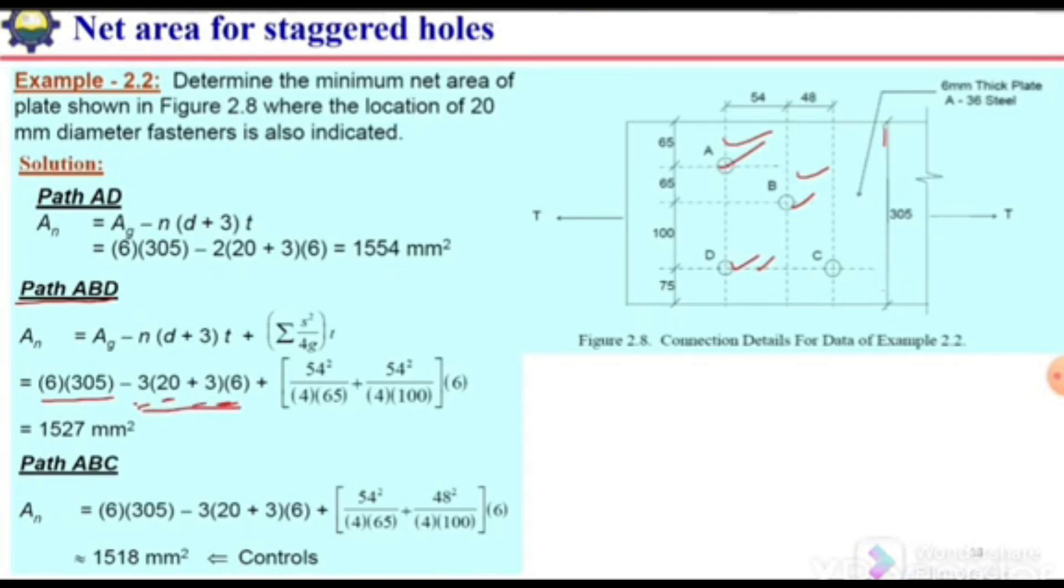Next we need to consider the stagger. We need to add the factor s²/4g for these two staggers. For the first case, A to B, we have stagger value 54, so 54² divided by 4g. The gauge length between A and B is 65, so 54² over (4 × 65).